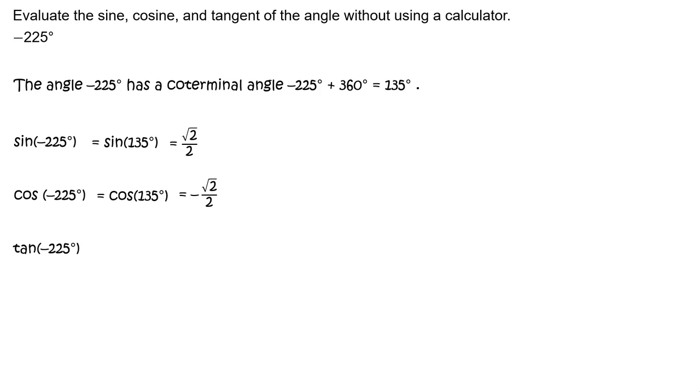Tangent of negative 225 degrees equals tangent of 135 degrees, which equals sine of 135 degrees divided by cosine of 135 degrees, or square root of 2 divided by 2 divided by negative square root of 2 divided by 2.